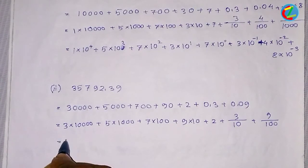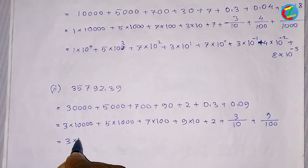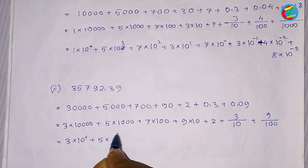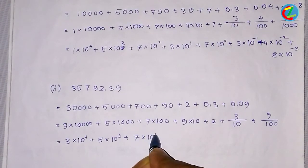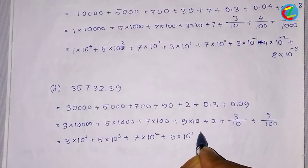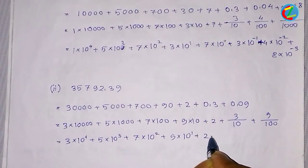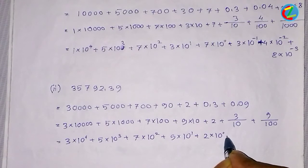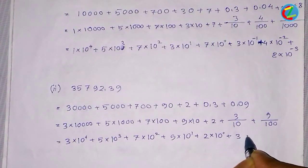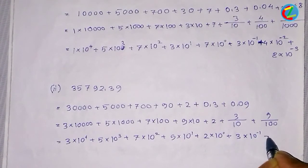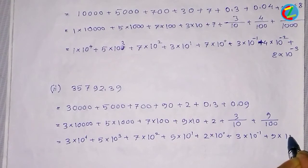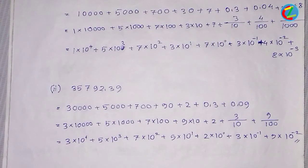And the answer is 3 into 10 to the 5, 4 plus 5 into 10 to the 3, plus 7 into 10 to the 2 plus 9 into 10 to the 1, 2 times 10 to the 5.